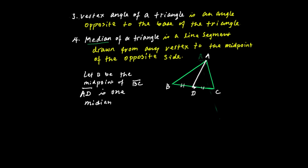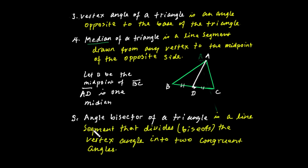The angle bisector of a triangle is a line that divides or bisects the vertex angle into two congruent angles. A line segment from the vertex bisects the vertex angle.